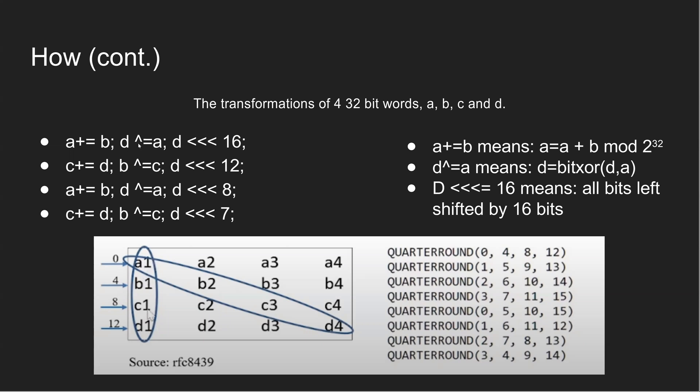And d would be XORed with a, which essentially is d equals bitXOR of d and a. Then d is shifted left by 16 bits. This pattern continues for the rest of the letters in the string literal.